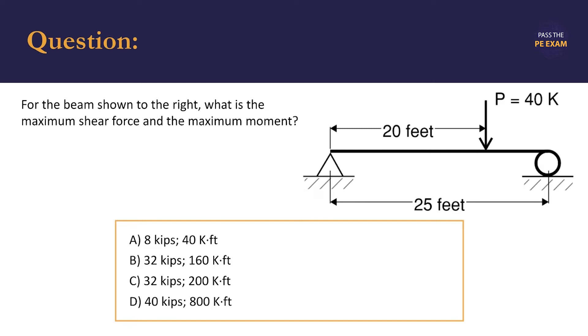We're given four options: A) 8 kips shear and 40 kip-feet moment, B) 32 kips and 160 kip-feet, C) 32 kips and 200 kip-feet, and D) 40 kips and 800 kip-feet.